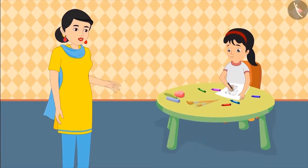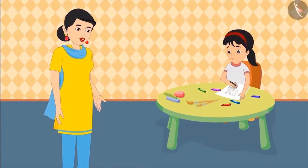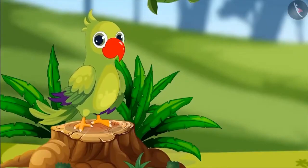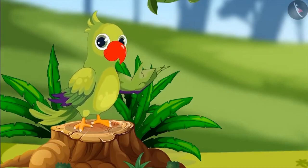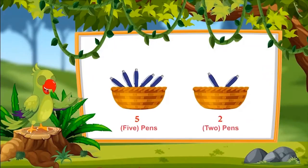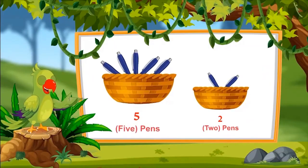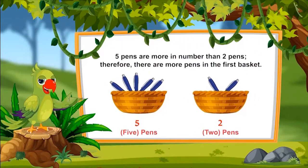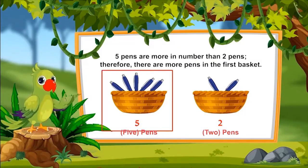Now quickly wash your hands and come — let me serve you food. So children, in this example you saw how Pinkie compared the number of different animals. Can you also compare the number of things near you like Pinkie? Which basket has more pens — the first basket containing five pens or the second containing two pens? Five pens are more than two pens, so the first basket has more pens.